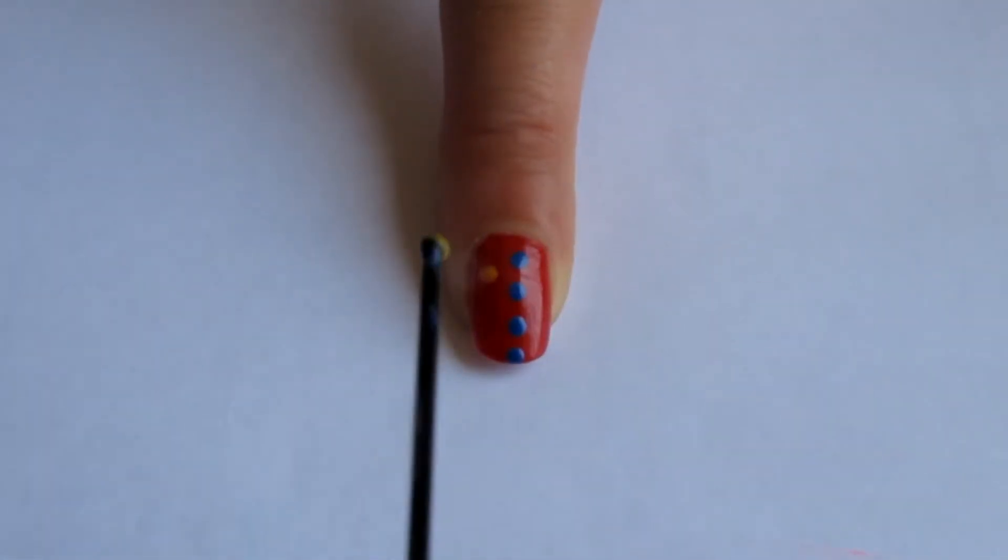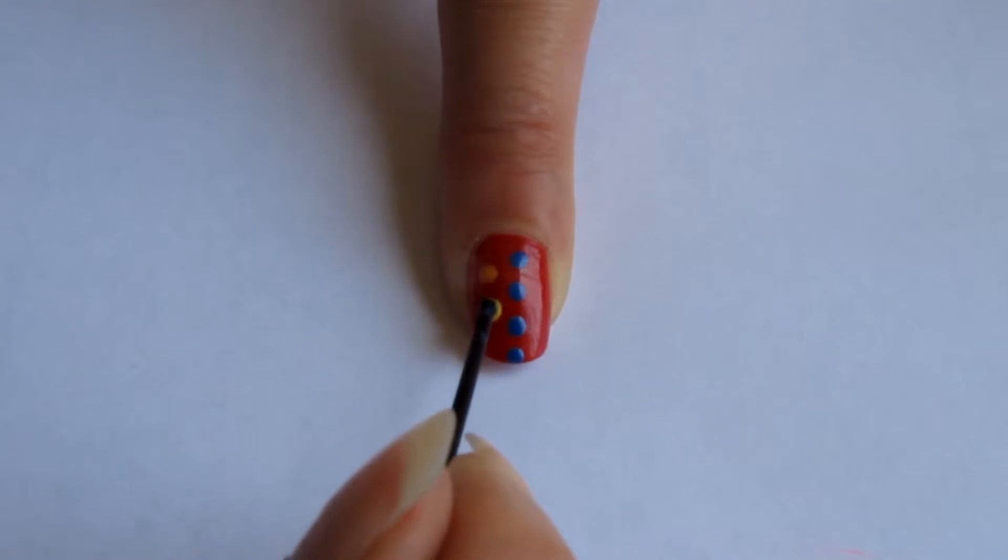Grab your trusty bobby pin again. This time using the L'Oreal Color Riche nail polish in Rebel Blue. Make four dots going down the center of the nail.